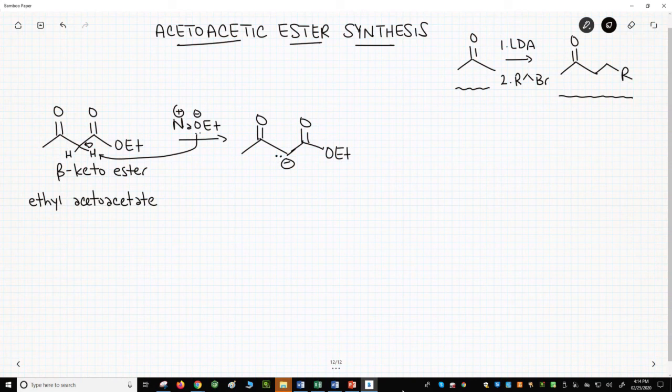This is important. To make an enolate, we normally need a very strong base like LDA. Because beta-ketoesters are more acidic, we can make the enolate with a relatively weak base like sodium ethoxide. More importantly, chemists had access to bases like sodium ethoxide way before they had LDA.